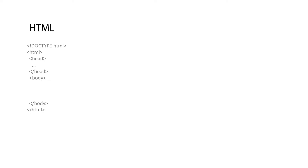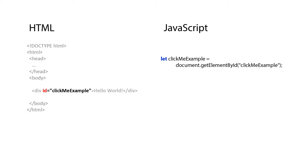One of the major advantages of using Angular is the ability to easily handle user interactions with the DOM. Consider this example. In order to give an element in the DOM a click feature, we have to define the element in the HTML page and give it an ID so we can reference it later. Once we have done that, we have to write some JavaScript code to get the element and then attach an event handler to handle our events.